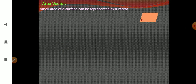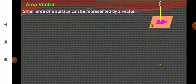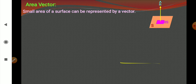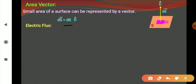Let us begin with area vector. So far you know that area is a scalar quantity, but we can represent it as a vector also. The magnitude of the vector is same as that of the area and it is directed along the normal to the surface area. We have chosen a small surface area ds and the area vector is acting along the normal. The vector is the product of the magnitude and the unit vector along the normal.